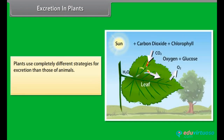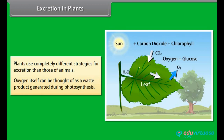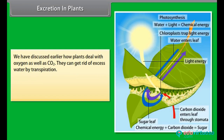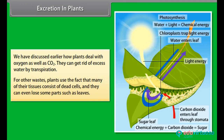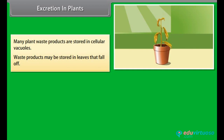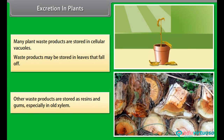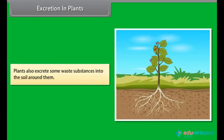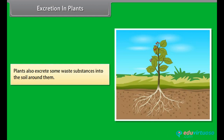Plants use completely different strategies for excretion than animals. Oxygen itself can be thought of as a waste product generated during photosynthesis. Plants can get rid of excess water by transpiration. For other wastes, plants use the fact that many of their tissues consist of dead cells and they can even lose some parts such as leaves. Many plant waste products are stored in cellular vacuoles, or in leaves that fall off. Other waste products are stored as resins and gums, especially in old xylem. Plants also excrete some waste substances into the soil around them.